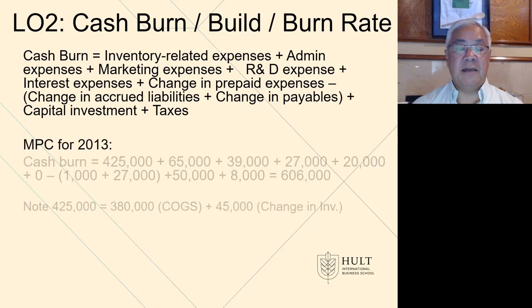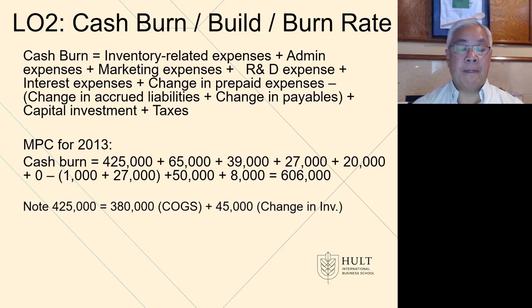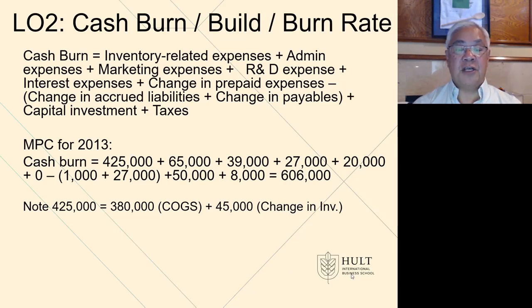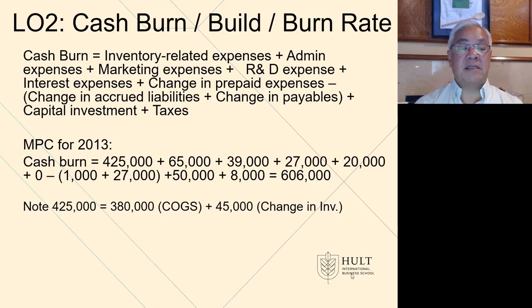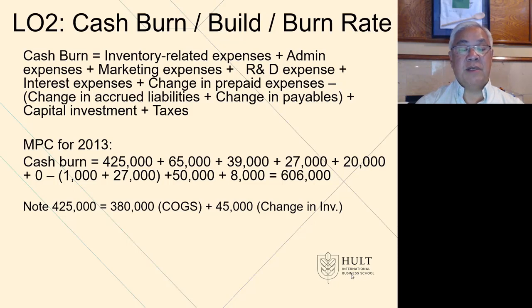In the example for MPC, the 425 number for inventory-related expenditures represents the cost of goods sold of 380 plus the change in inventory of 45 — that's how 425 is derived. The next ones are straightforward from the income statement: $65,000 for admin, $39,000 for marketing, $27,000 for R&D. Then we add the changes in prepaids — there were none — the change in accrued liabilities of $1,000, and the change in payables of $27,000, meaning we're going to be burning that additional cash.